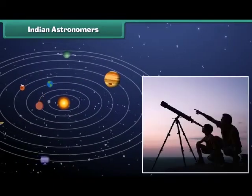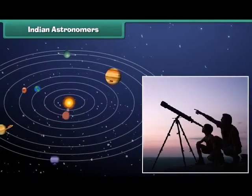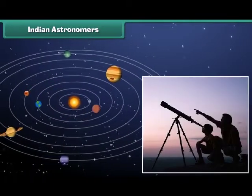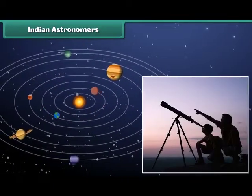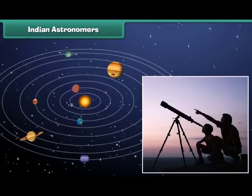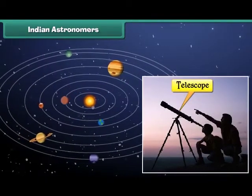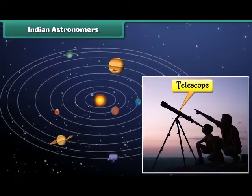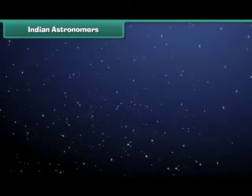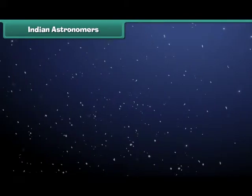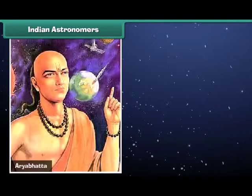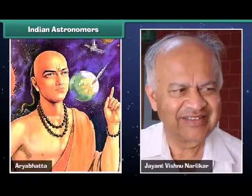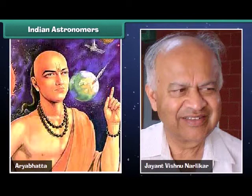An astronomer is a person who studies stars and planets. He uses a telescope for his study. Bhaskaracharya, Aryabhatta and Jayant Vishnu Narlikar are some well-known Indian astronomers.